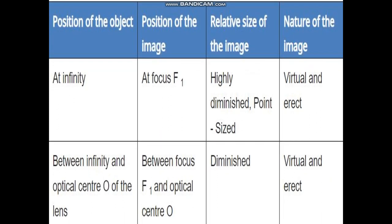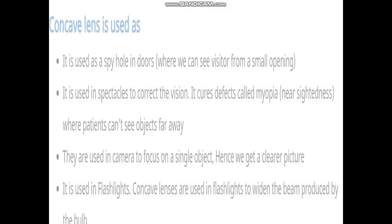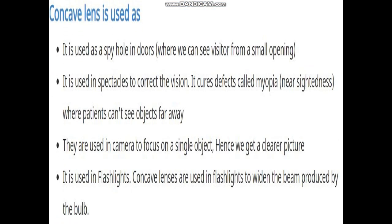The image formed by a concave lens is always diminished and virtual. Let's see how this nature and size of the image from a concave lens may be used. Concave lens is used as a spy hole in doors, where we can see visitors from a small opening. It is also used in spectacles to correct vision — it cures the defect called myopia, or nearsightedness, where patients can't see objects far away. Concave lenses are also used in cameras to focus on a single object, giving a clearer picture.